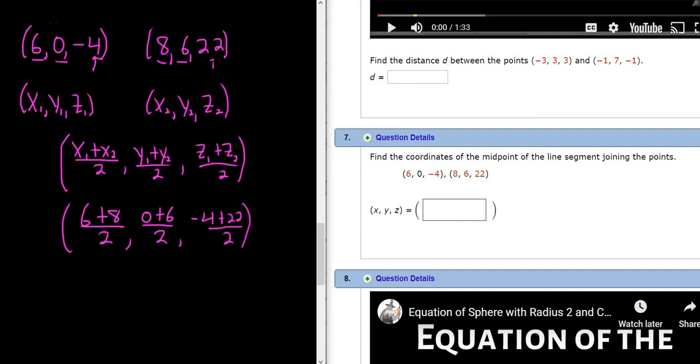I don't even think about the formula so much. I just know that you basically add them up and divide by 2. So 6 plus 8 is 14, so we get 14 over 2, 6 over 2, and 18 over 2.